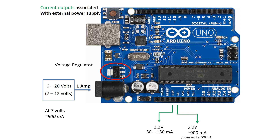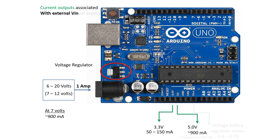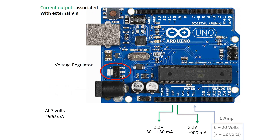So just keep this in mind when selecting your power supply. Since the VIN pin taps the barrel jack before the voltage regulator, we can tap into the actual voltage provided by that barrel jack minus about half a volt. We can also source about 1 amp through the VIN pin, which will give us the same performance on the 3.3 and 5 volt pins as if we were powering the Arduino from the barrel jack.